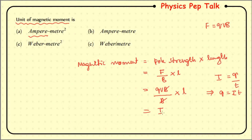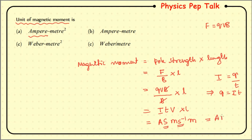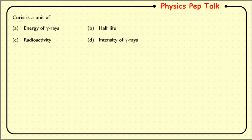Working out the units: current in ampere, time in seconds, velocity in meter per second, length in meter. The seconds cancel and we get ampere times meter squared. Therefore option A, ampere meter square, is the unit of magnetic moment. This option is the correct answer for this question.